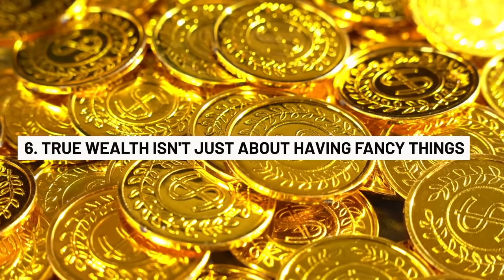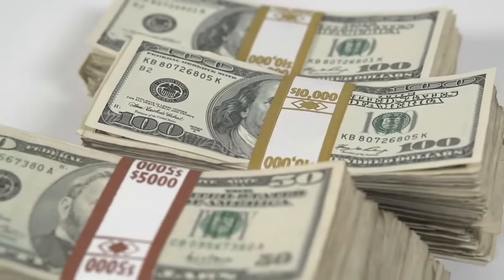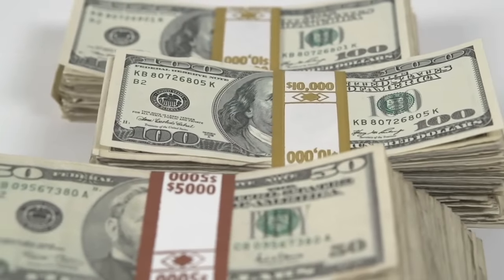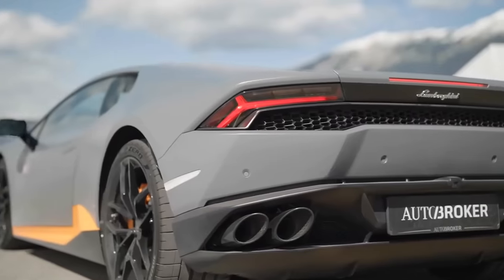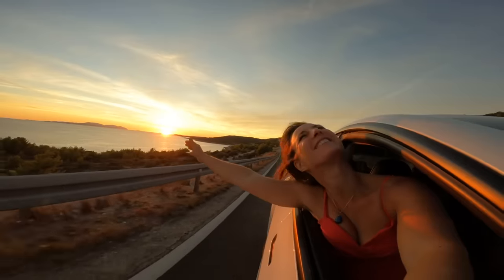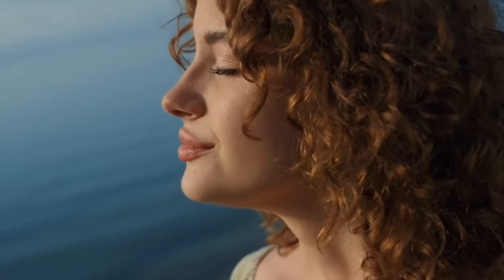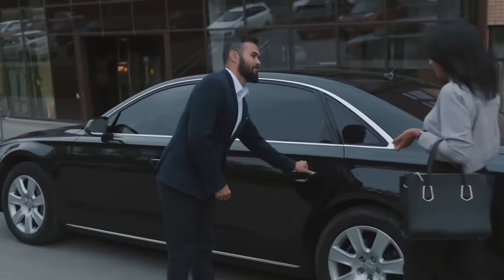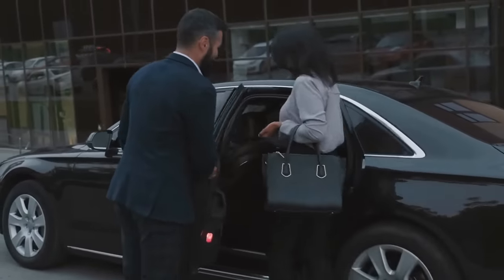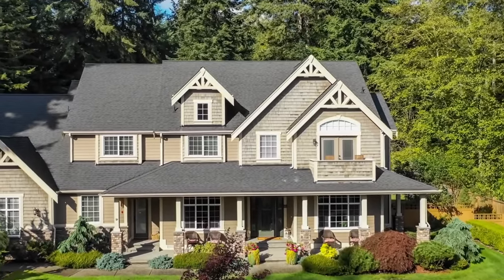True wealth isn't just about having fancy things. Many people think that being rich means having lots of money to buy expensive stuff like cars and gadgets. But there's more to it than that. In a book called The Psychology of Money, the author Morgan Housel explains that real wealth is not always visible. Some of the wealthiest people I know have regular cars and modest homes. They don't show off their money.